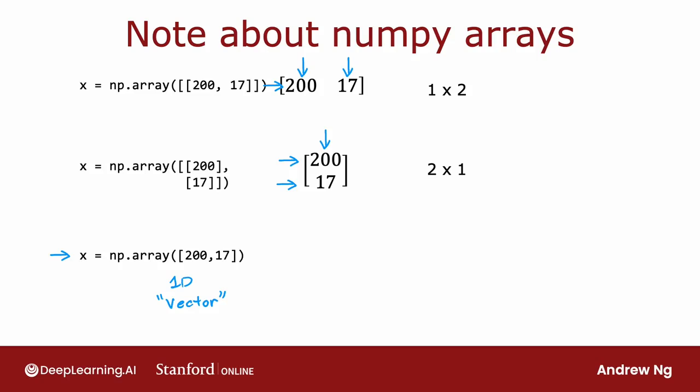So whereas in course 1, when we're working with linear regression and logistic regression, we use these 1D vectors to represent the input features x. With TensorFlow, the convention is to use matrices to represent the data. And why is there this switch in conventions? Well, it turns out that TensorFlow was designed to handle very large datasets. And by representing the data in matrices, instead of 1D arrays, it lets TensorFlow be a bit more computationally efficient internally.